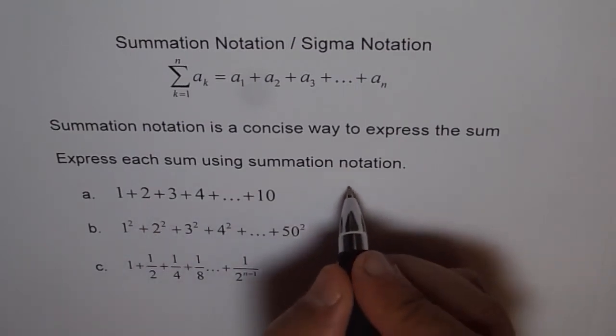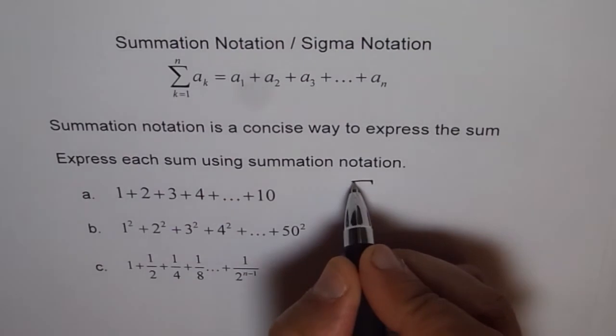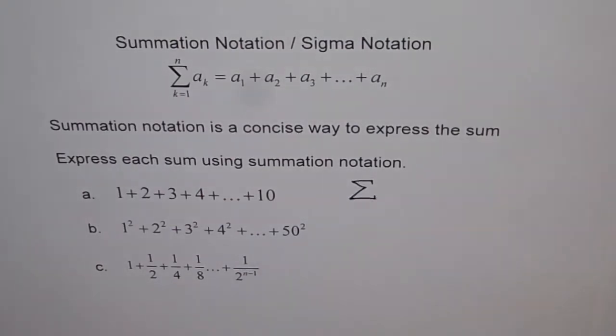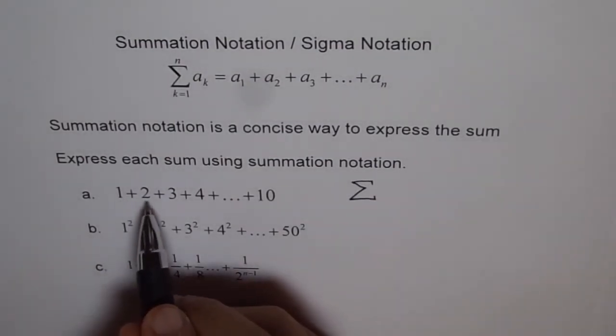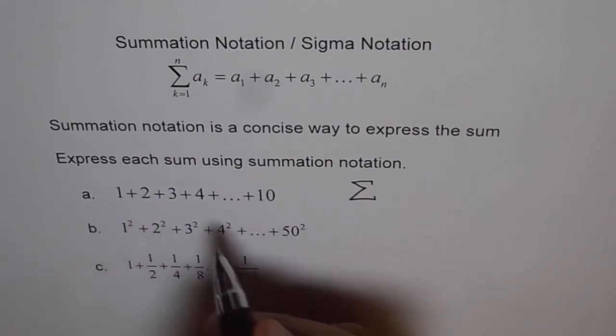First, write the symbol which is called sigma in Greek. And it is equivalent to S, capital S, for sum in English. Now, each term can be represented by, let's say, a variable, because it is just varying, right?